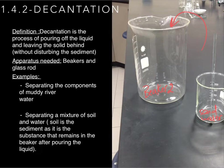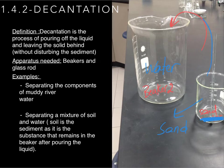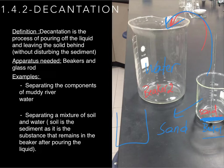The water in beaker 2 is poured off, and what remains in the first beaker is the sand. Before starting decantation, you have to leave the mixture on the bench for about 5 minutes so the sand sinks to the bottom and the water floats on the surface. Then you start decantation — the water goes first, and the sand remains in beaker 1.